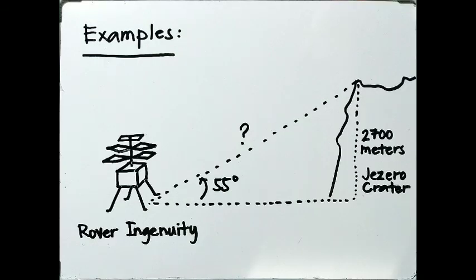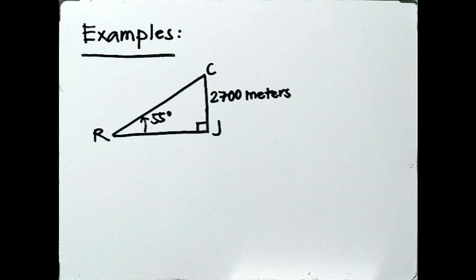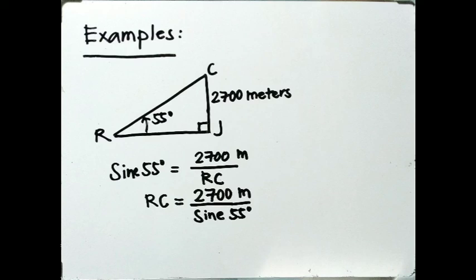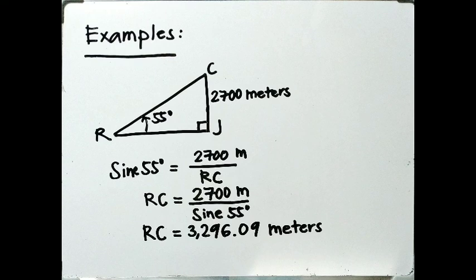For our last Mars example, find the diagonal distance that rover Ingenuity can reach the top of the Jezero crater, having a height of 2,700 m from the notional sea level on Mars, with an angle of elevation of 55 degrees from its starting point of flight. Draw right triangle RCJ where R is the starting point. The equation is sine 55° = 2,700 m / RC. Dividing 2,700 m by sine 55°, the diagonal distance is 3,296.09 m.